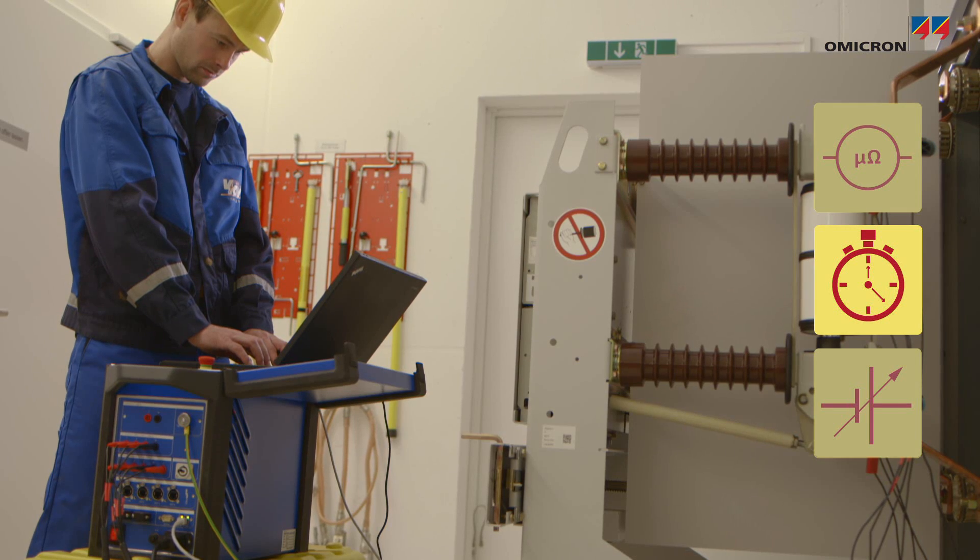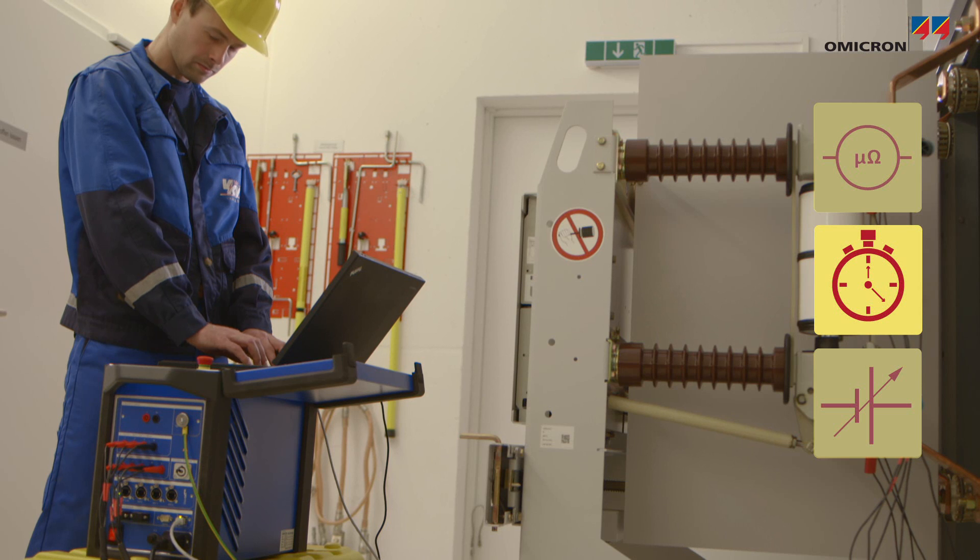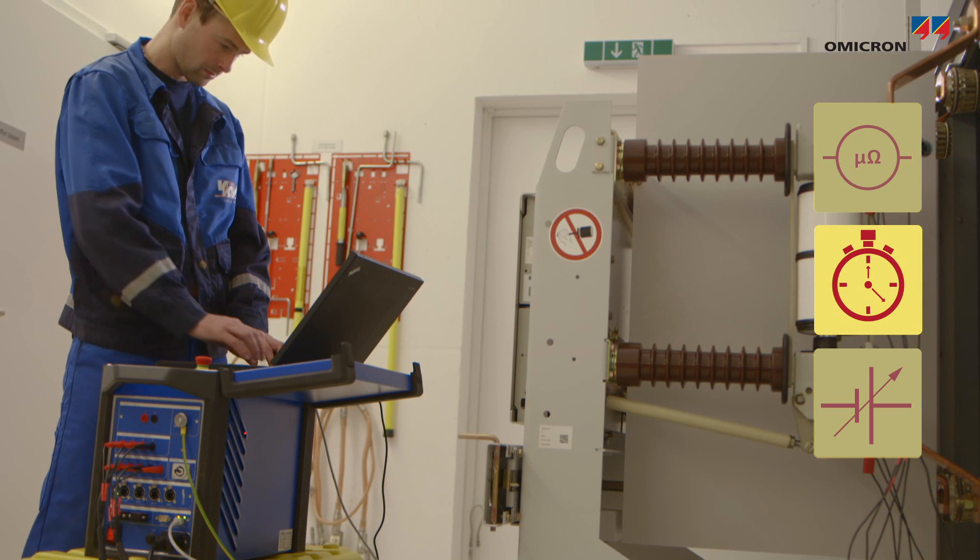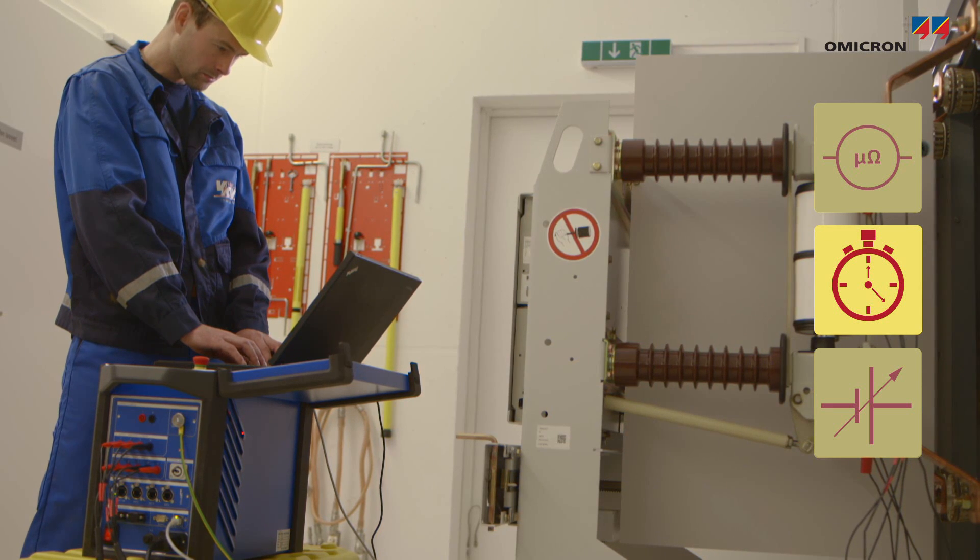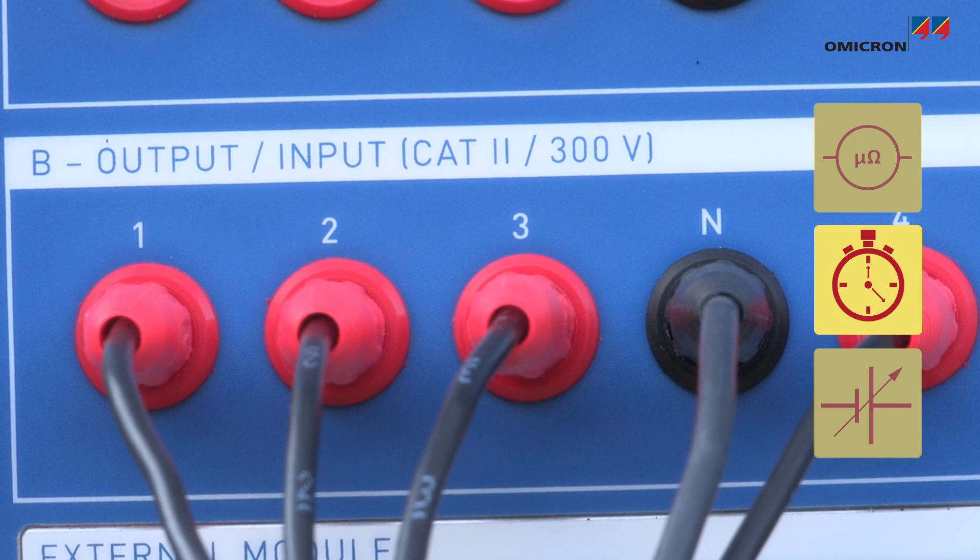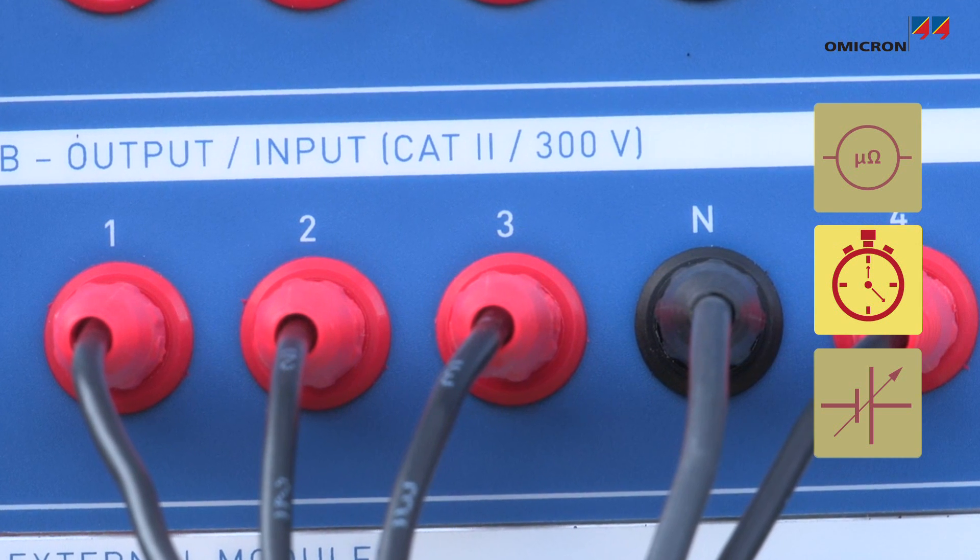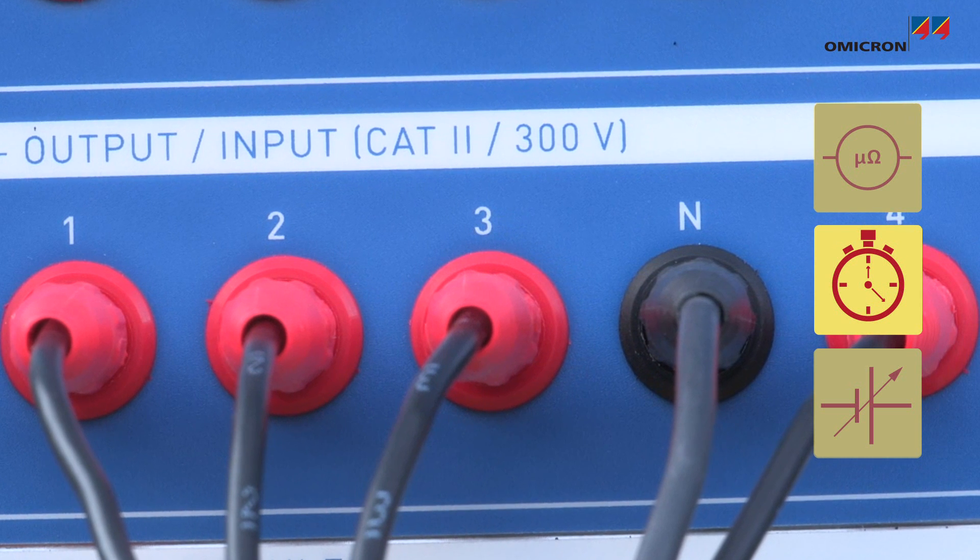When measuring the opening and closing times of main and auxiliary contacts, as well as the deviations between them, the Sabano can operate the trip and closing coils and automatically record the voltage and current signals in order to perform a comprehensive analysis.